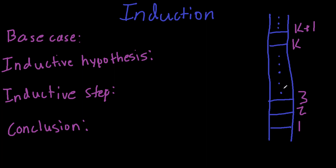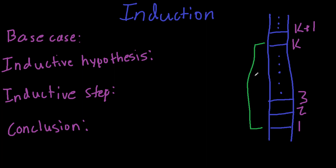On the ladder, you have steps one, two, three, and numbers in between, then k and k plus one. The basic idea is: if you can prove that you can get on the first step, and then you assume that you can get on k steps — where k is anything between the base case of one and k — you can't prove k initially, you have to assume it.